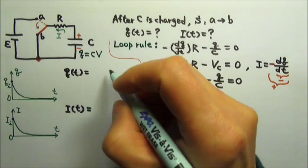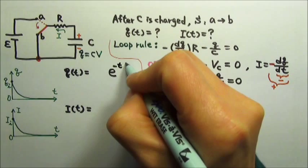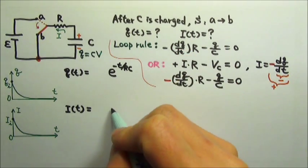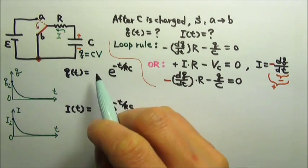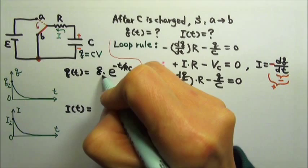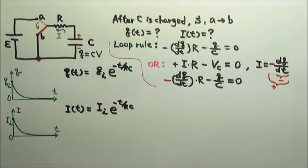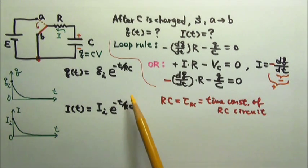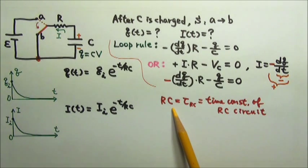So Q as a function of time would have a format that's e to the negative t over RC. Same here, e to the negative t over RC. And what do you think goes here? It's the initial charge. And for this one, that's the initial discharging current. Again, the RC is the time constant of the RC circuit. The larger the R times C, the longer it takes to discharge the capacitor.